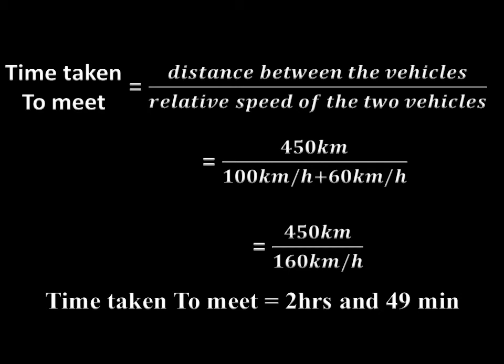Time taken for them to meet = distance ÷ relative speed = 450 kilometers ÷ 160 kilometers per hour. This gives us 2 hours and 49 minutes. That is the time taken for the two vehicles to meet.